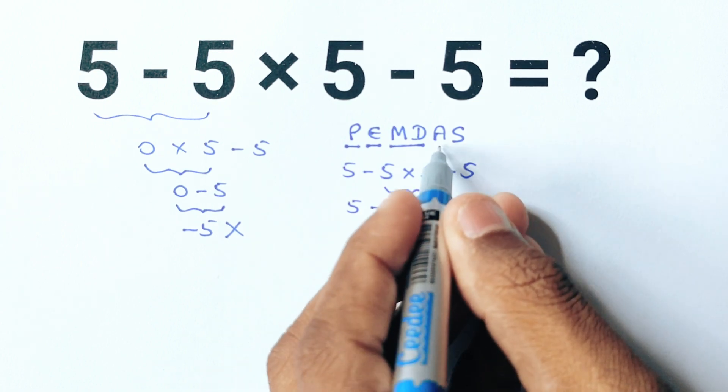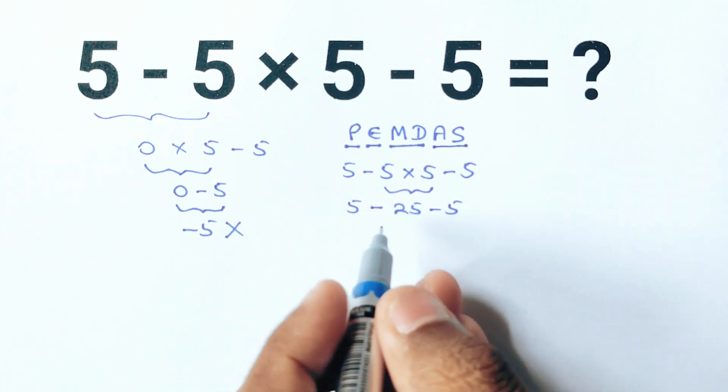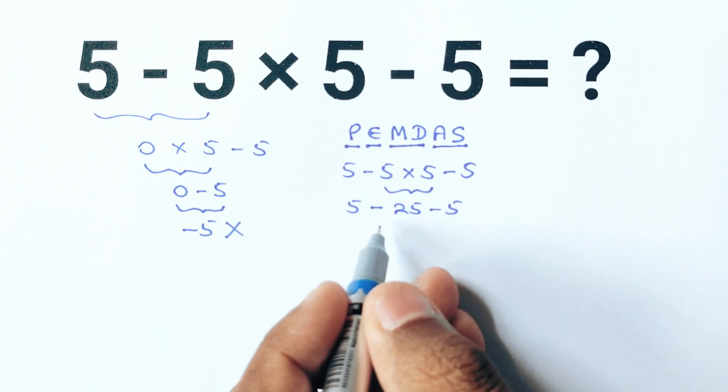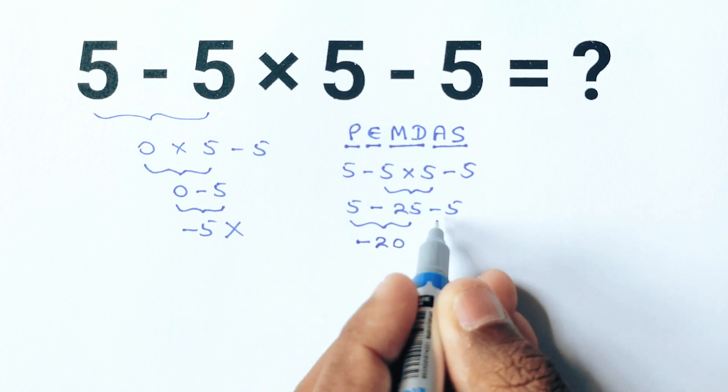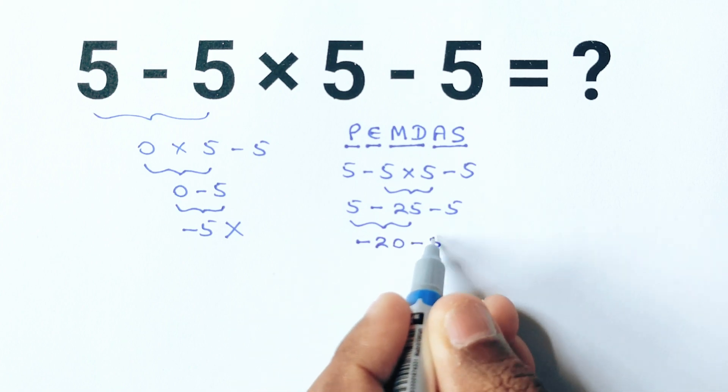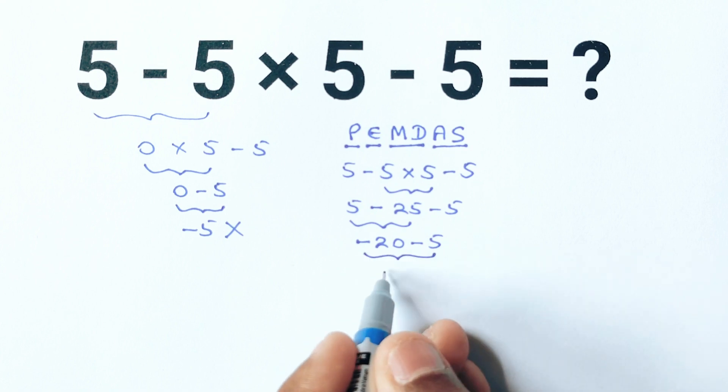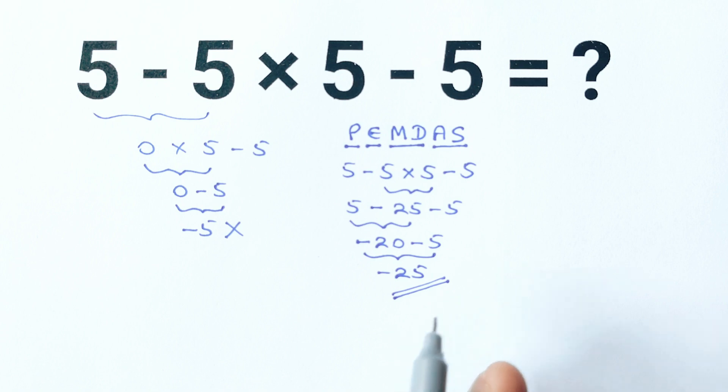After that we move to addition and subtraction also from left to right. So 5 minus 25 equals negative 20. Now the expression looks like this and negative 20 minus 5 equals negative 25. So the correct answer is negative 25.